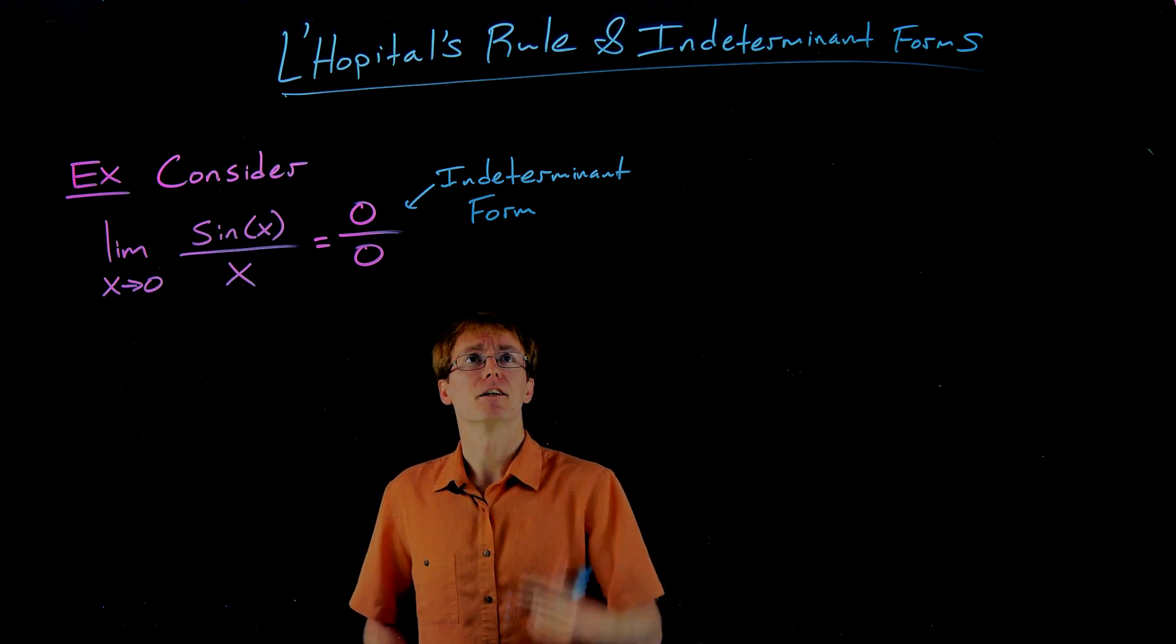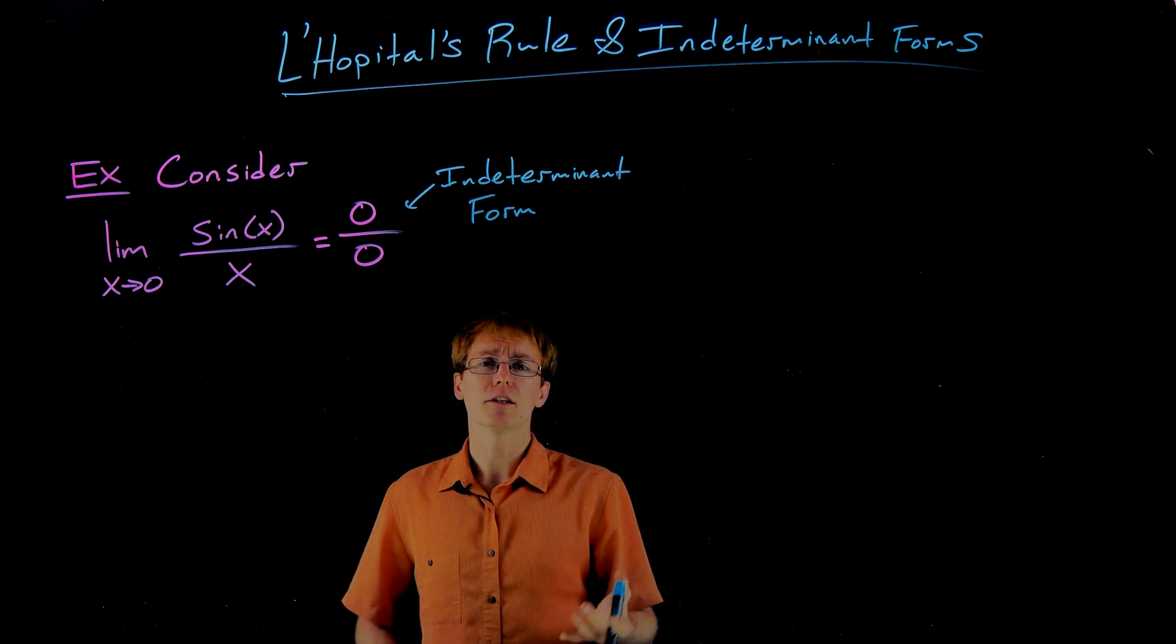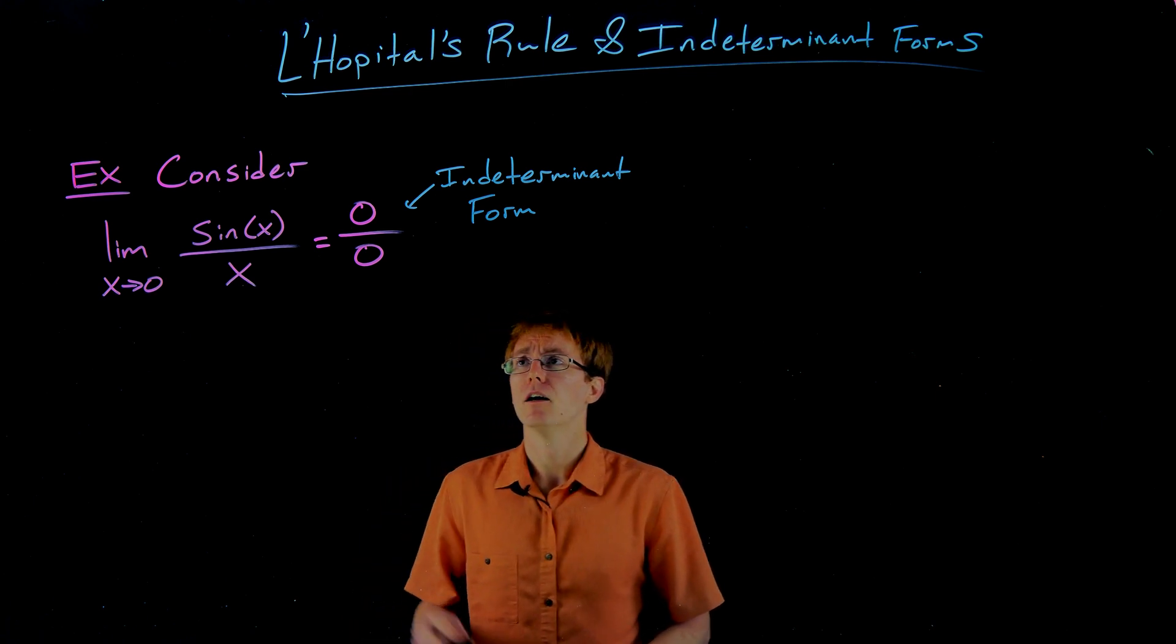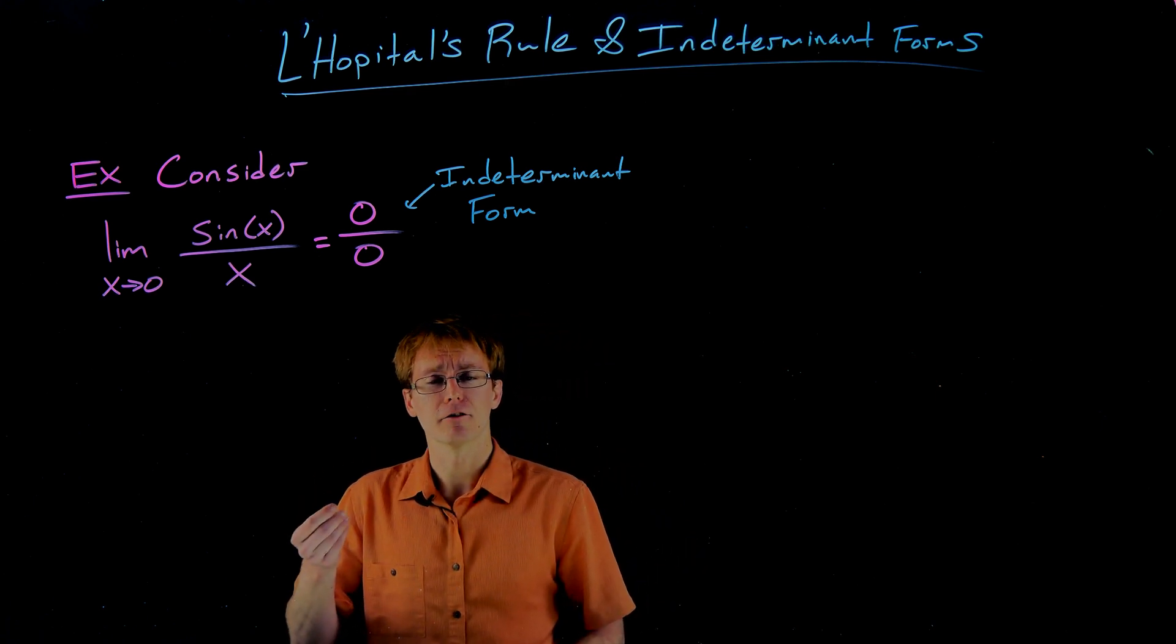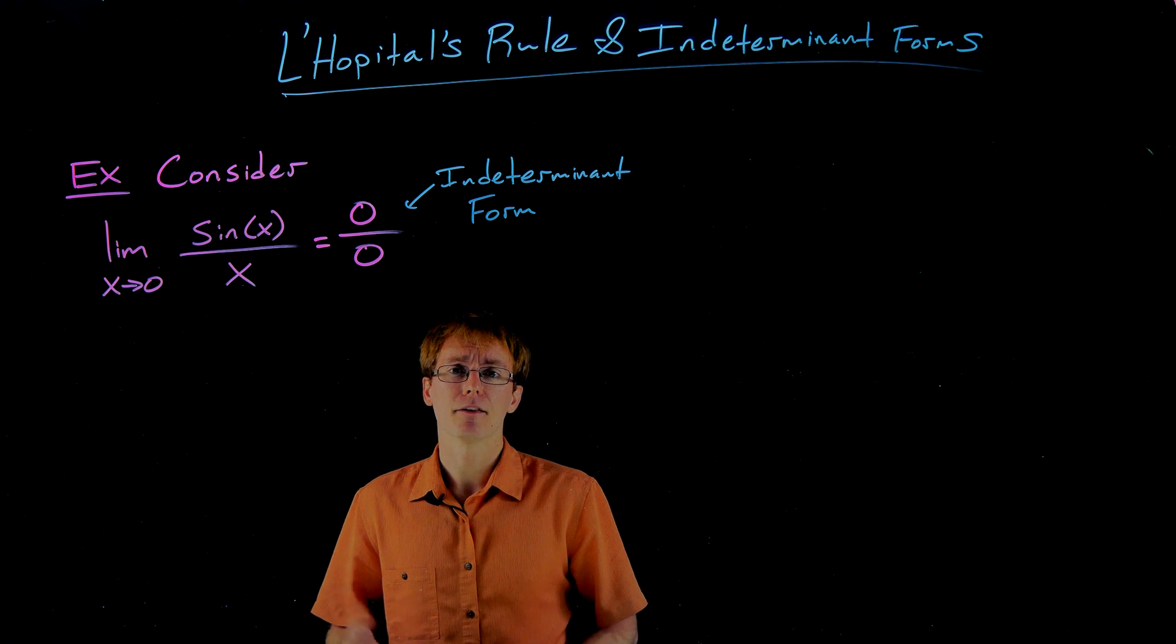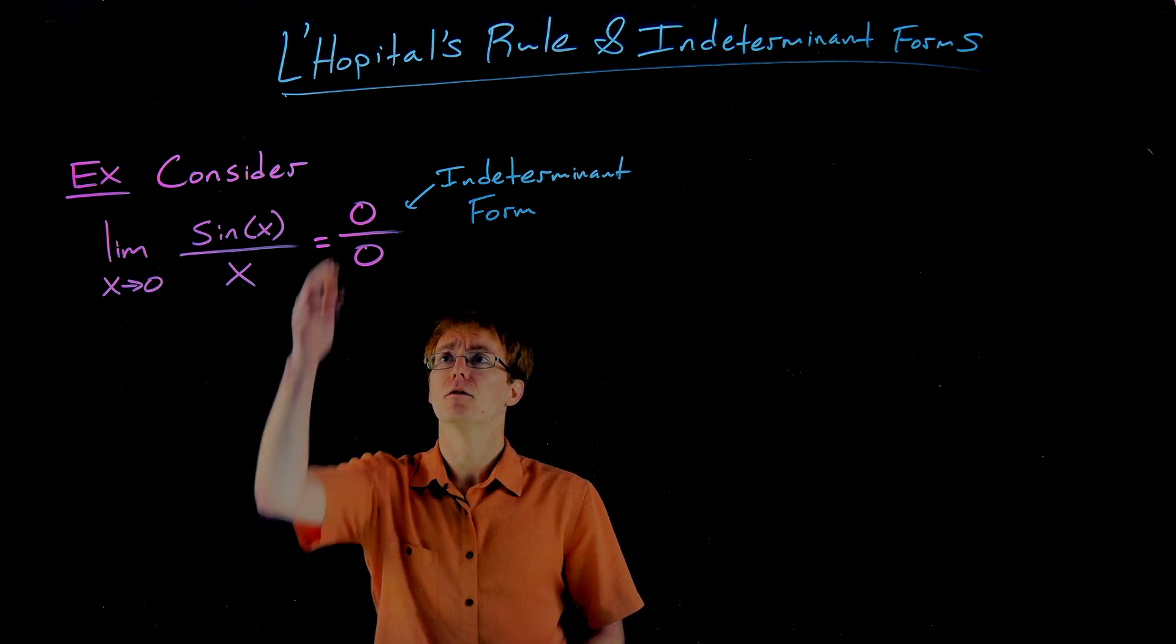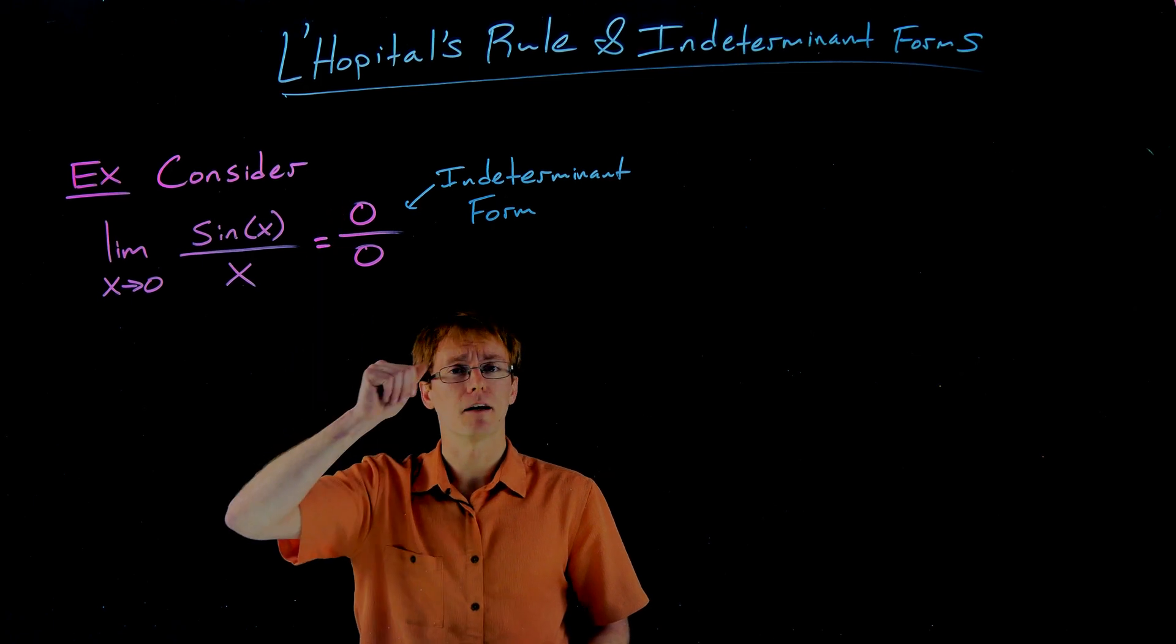We call this indeterminate form because, well as the name suggests, we can't really determine the value of this expression just by looking at it. For these indeterminate forms, there's usually two rules that are at play that are kind of contradicting each other, and that's why we can't determine their values. So here we have zero divided by zero.